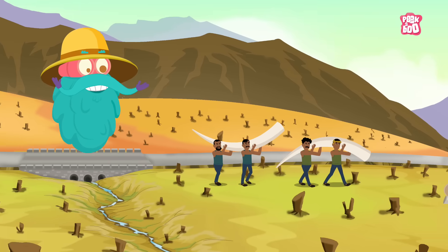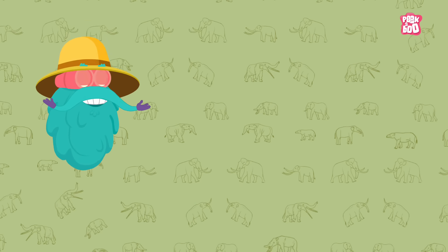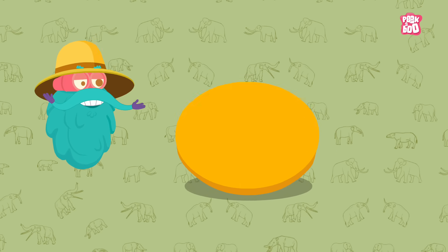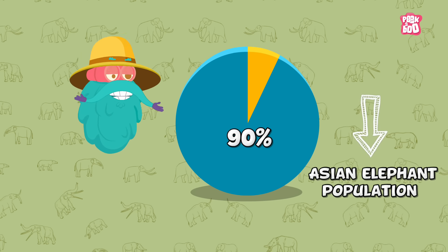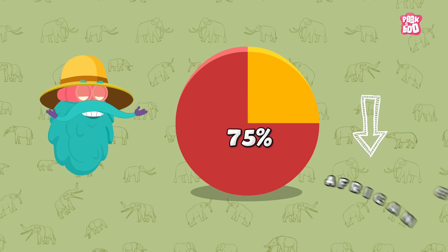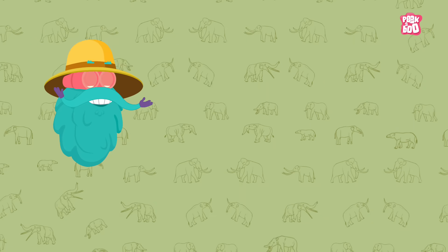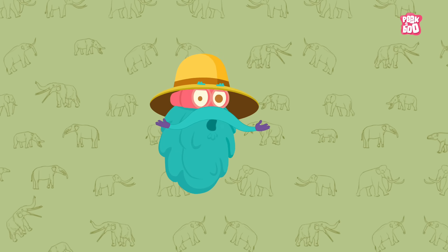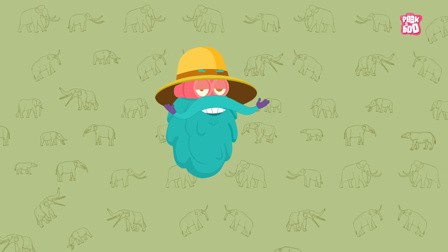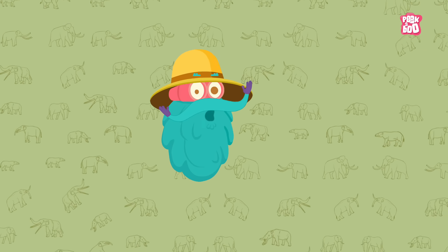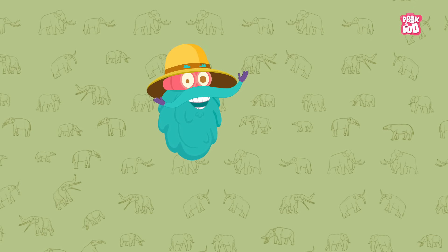Did you know that loss of habitat and poaching for ivory and bush meat are great threats to elephant populations? As of 2013, there has been an estimated 90% decline in the Asian elephant population and a 75% decline in the African elephant population over the last 100 years. So my dear friends, we must do everything to protect this nature's massive wonder — the elephant — and spread awareness about their condition. One great way to contribute is by sharing this video with family and friends.